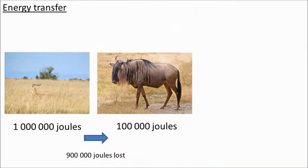Let's talk about energy transfer through food chains. Let's imagine 100 square miles of savannah. Some wildebeest come along and they eat 1 million joules of grass. Now what happens to that million joules of energy? Well most of it will be undigested by the wildebeest and lost as feces.